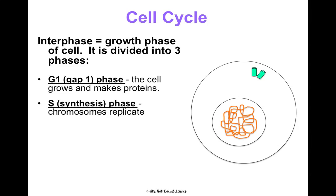The S phase is so important because if this didn't happen, when the cell divided you'd only have half of the DNA you need in each cell, and then when those divided each would only have a quarter of the DNA — it would get worse and worse. So before the cell even starts dividing, we double the amount of DNA so that when it splits, every cell has the right amount of DNA. We're going to learn all about this process in our genetics unit later.